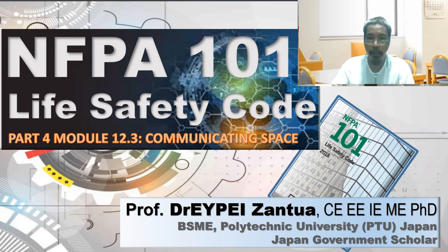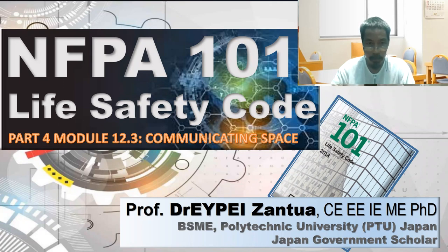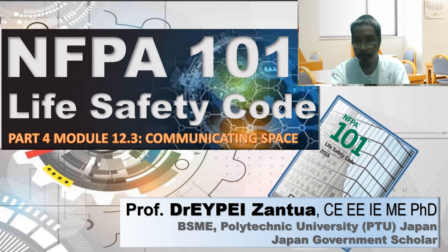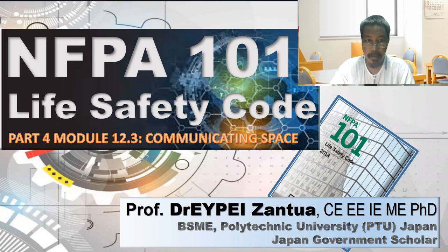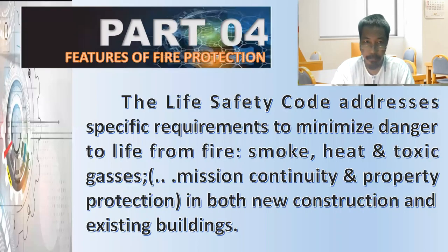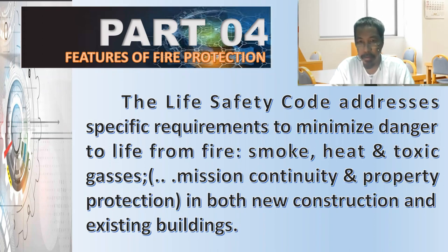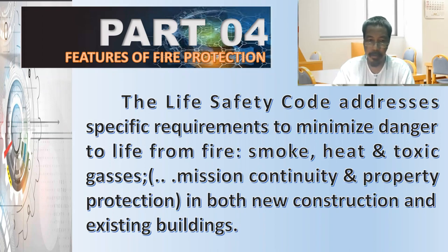In this video, let us continue our discussion of NFPA 101 Life Safety Code. Let us proceed with subtopic number three, module 12. We have features of fire protection as the main subject of part four. The objective of the code is to minimize danger to life from fire, smoke, heat, and toxic gases. It provides mission continuity and property protection in new construction and existing buildings.